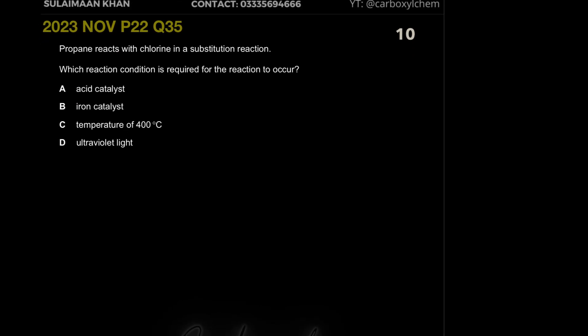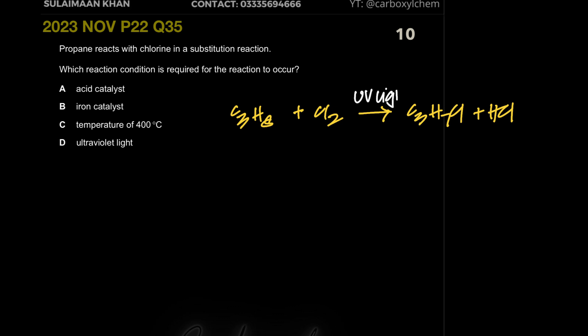Last MCQ: propane reacts with chlorine in a substitution reaction. Propane is C3H8 — twice the carbons plus two gives eight hydrogens. The reaction gives C3H7Cl plus HCl. The question asks which condition is required. An acid catalyst isn't needed; iron catalyst is for the Haber process; 400°C alone is not the answer. Ultraviolet light is required because it provides the activation energy for the substitution reaction.